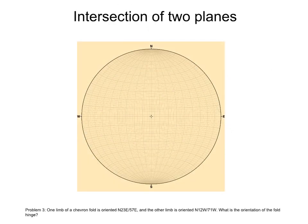The stereonet is very useful to solve problems related to planes and lines, for example the intersection of two planes. Let's look at this problem. One limb of a chevron fold is oriented north 23 east, 57 east.